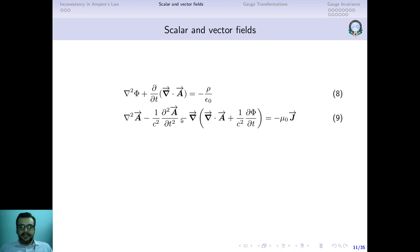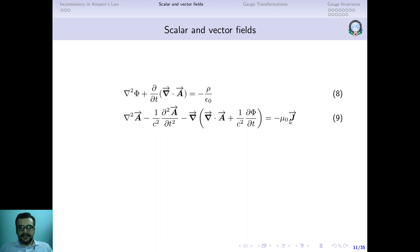Equations 8 and 9 contain φ and A, but they look really complicated and are not easy to solve. We need another kind of simplification. To make them look better and more elegant, we define two additional quantities.